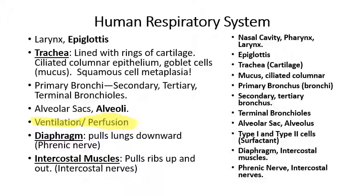Ventilation refers to moving air in and out of the lungs, and a ventilator is a machine that does that. Perfusion is the process of moving blood through the body and mainly through the lungs to get fresh oxygen. In order to get fresh air into the lungs, the diaphragm pulls the lungs downwards controlled by the phrenic nerve, and the intercostal muscles pull the ribs upwards and outwards controlled by the intercostal nerves, which pulls air into the lungs.